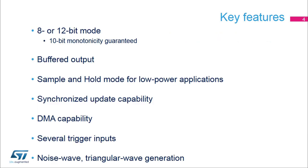The Digital to Analog Converter inside STM32L4 products offers simple digital to analog conversion in an 8 or 12-bit mode. 10-bit monotonicity is guaranteed. The DAC output can have a low impedance buffer to drive external loads, and its sample and hold mode can reduce power consumption significantly. Two DACs can be synchronized with each other.